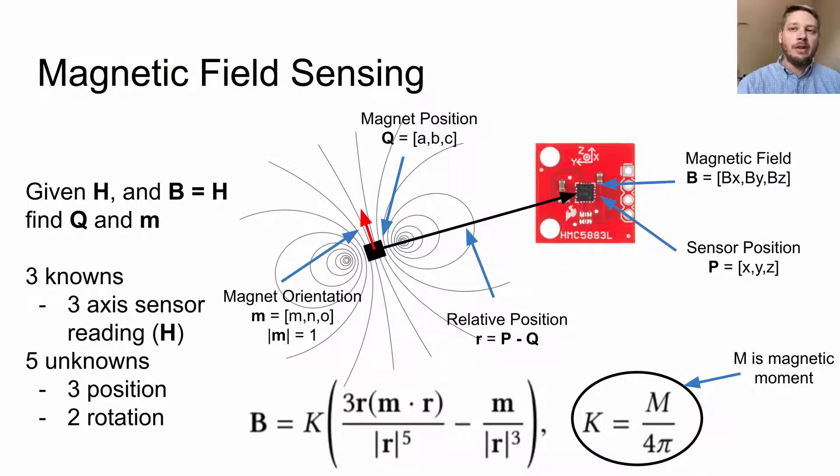Here's a quick overview of magnetic field sensing. I'm not going to get into all the details - you can pause the video and look at this or read the paper. But fundamentally, the magnetometer gives us three readings of the magnetic field and we have five unknowns. So we have an under-constrained problem.